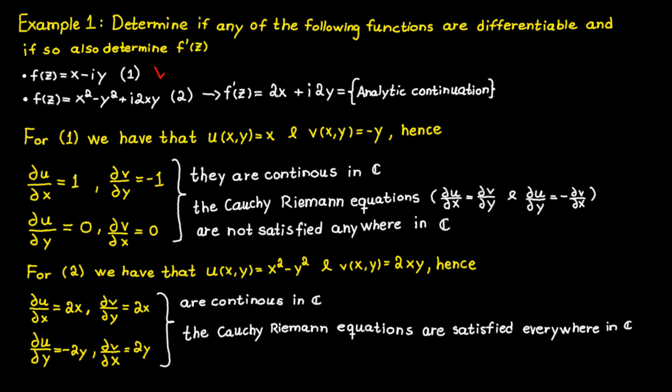The idea is that if two analytic functions are the same on some region in the complex plane, then they must be the same on the whole complex plane. For example, if we observe this function on the real axis, then y equals zero and x equals z in this region. That means the derivative f prime equals 2z in this region, and by analytic continuation these two functions are the same on the whole complex plane.